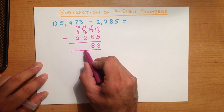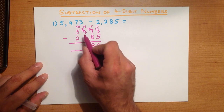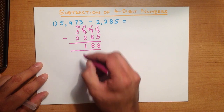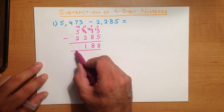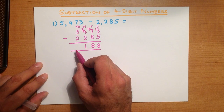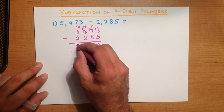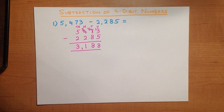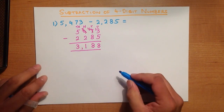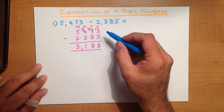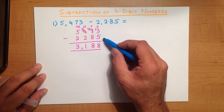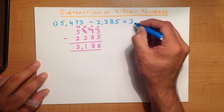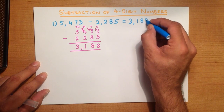We now do the hundreds column: 3 minus 2, which is 1. And lastly, we do the thousands column: 5 minus 2 — that's nice and easy — it's 3. We can put a little comma here if need be. So 5,473 minus 2,285 is 3,188.